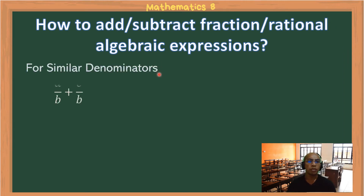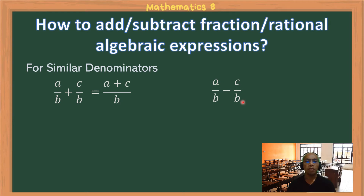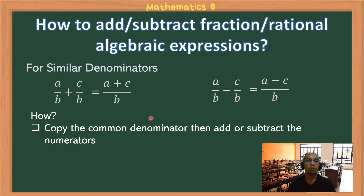How to add or subtract fractions or rational algebraic expressions with similar denominators: a/b + c/b equals (a+c)/b, and a/b − c/b equals (a−c)/b. In other words, we copy the common denominator, then add or subtract the numerators, and simplify the resulting fraction if possible.